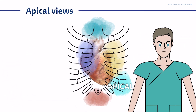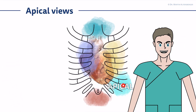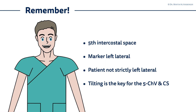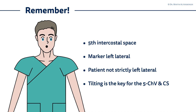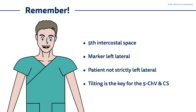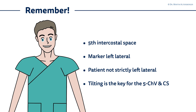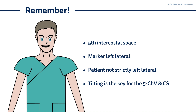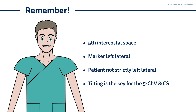The apical views are located at the apex of the heart — the left ventricular apex — in the fifth intercostal space approximately, but it varies. The marker in this view, including the five-chamber view, coronary sinus view, and the atypical views, points initially towards the left lateral. The patient is not strictly left lateral, and you tilt from the four-chamber view towards the five-chamber view, and in the other direction towards the coronary sinus view.